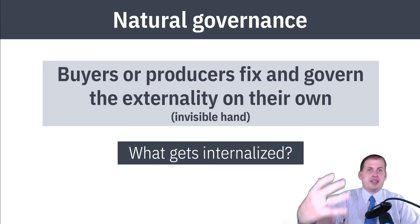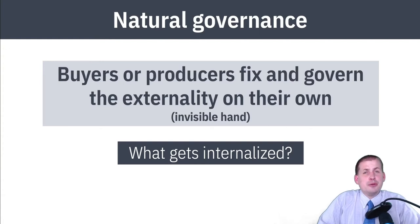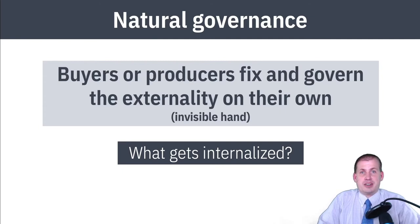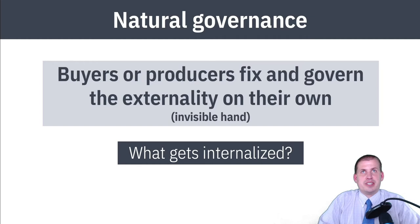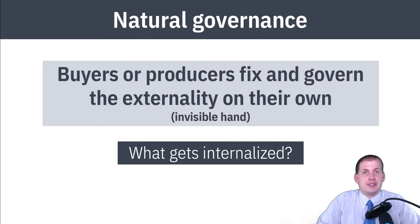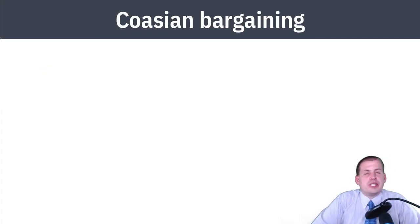Natural governance is interesting because polluting firms can get punished by the market and internalize costs. However, it doesn't necessarily work in real life. Most consumers don't actually care about fair trade coffee or ethical diamonds — they just buy whatever is cheapest. If you're using unfair labor practices to produce really cheap chocolate, people will buy that rather than your ethical free trade version.